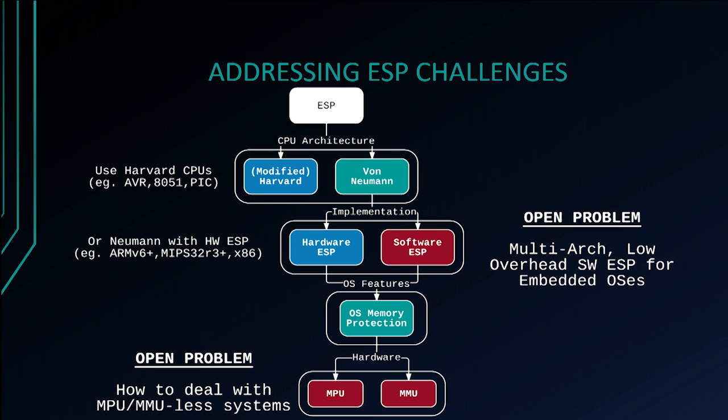For ESP, vendors should use Harvard architecture CPUs wherever possible, such as AVR, or when using a von Neumann core, choose one with hardware ESP support such as ARMv6+, x86, or MIPS32 release 3. But this still leaves constrained devices where it's not possible. Two major open problems remain: first, there is a real need for a multi-architecture, low-overhead software ESP implementation for all embedded operating systems — currently only PaX exists for Linux. Second, we need solutions for embedded devices that lack an MPU or MMU entirely. This is an open problem we'd very much like to see addressed.